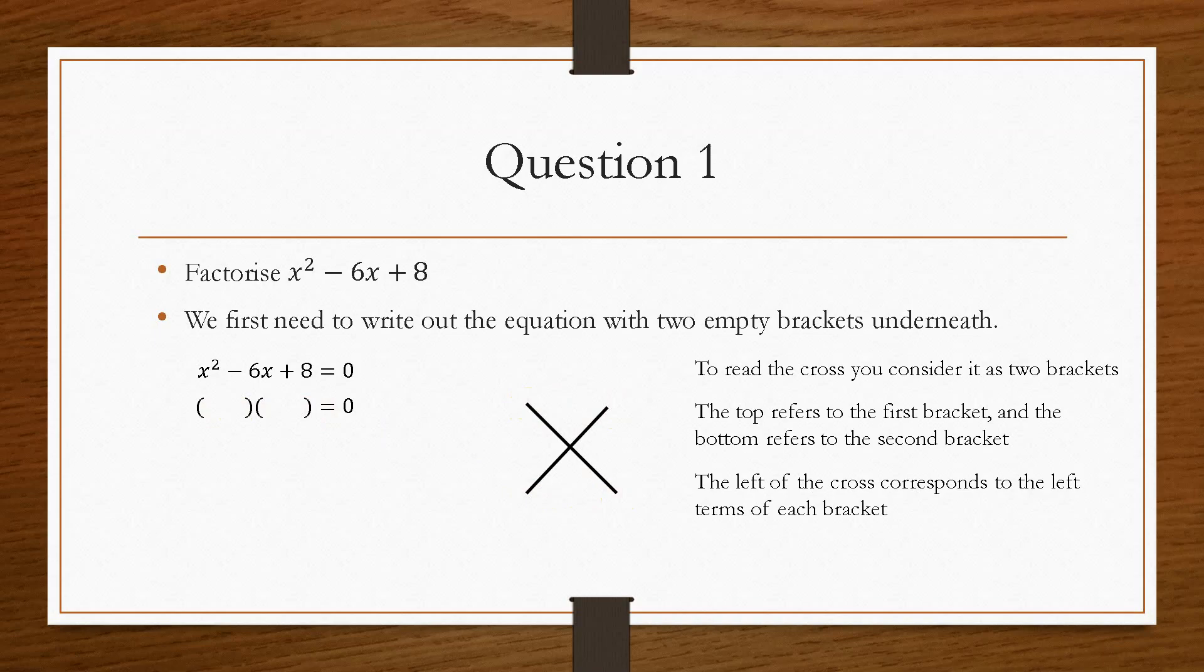The left hand side of the cross corresponds to the left terms, the first terms, inside the bracket. So we pop in our x's here, because this is going to make up the x squared. So it's x times x equals x squared. This x corresponds to that x, and that x corresponds to that x. The right hand side corresponds to the right hand side of the bracket and the cross.